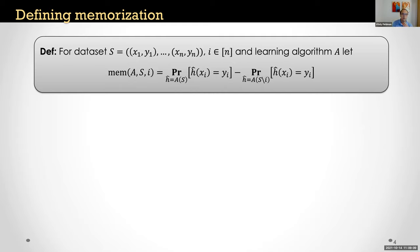The definition intuitively says the label of a training example is memorized by a learning algorithm if the algorithm cannot predict that label based on the rest of the dataset, but it still fits the label. Formally, for a dataset S of n labeled examples, index i, and learning algorithm A, we measure memorization of example i as the difference between how well the algorithm fits example i in training, and how well it predicts the label of that example when it's removed from the dataset. We say an example is memorized if this memorization value is relatively large, e.g., larger than some fixed positive constant like 50%.